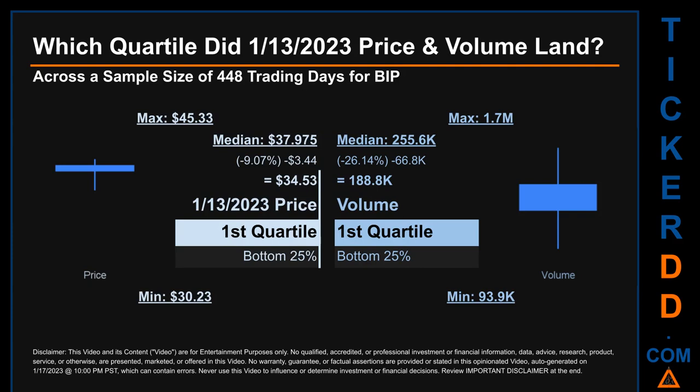Descriptively, BIP has a median price of $37.975. Therefore, January 13, 2023's price was lower from that middle marker by 9.07%. The day's volume of 188,800 was less than the median by 26.14%.